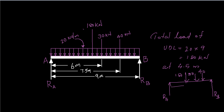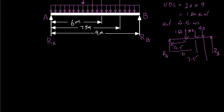The distances are: 4.5 meters for the UDL resultant, 6 meters for the 30 kN load, and 7.5 meters for the 40 kN load, over a total span of 9 meters. Taking moments about A — the summation of moments about any point should be zero for the system to be in equilibrium.